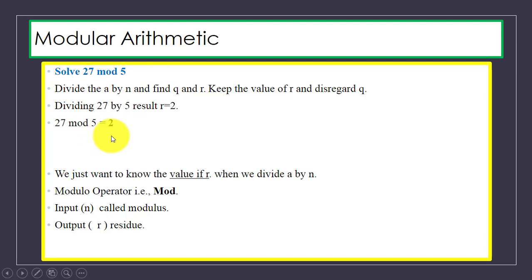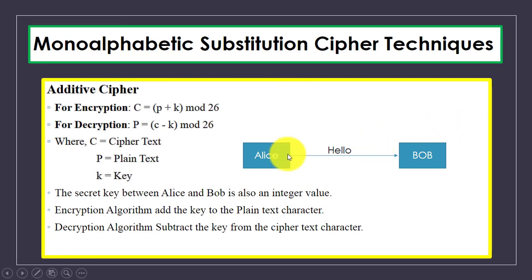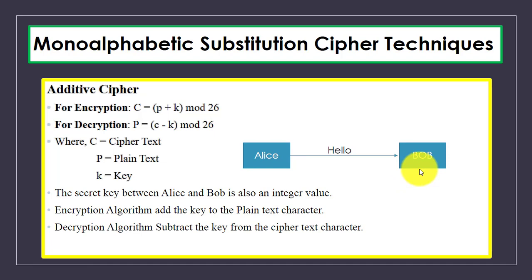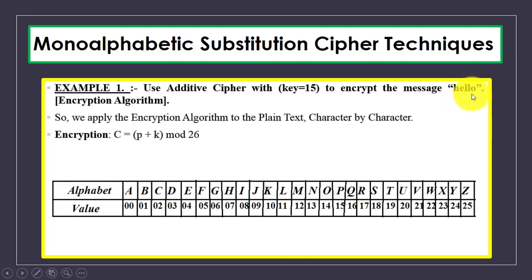Now we will use additive cipher with key 15 to encrypt the message 'hello'. We apply the encryption algorithm C = (P + K) mod 26 character by character. The secret key is the integer value 15. 'Hello' has five characters: H, E, L, L, O. We apply the algorithm to each character, using the numeric values from the alphabet table.